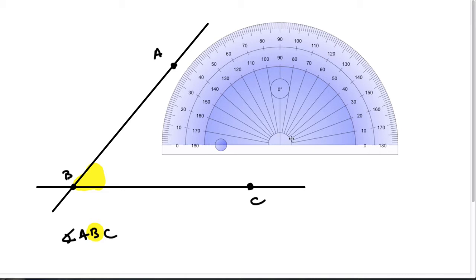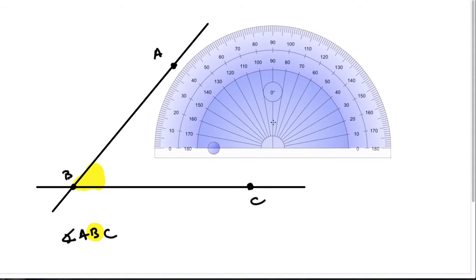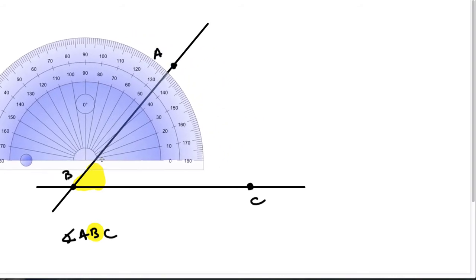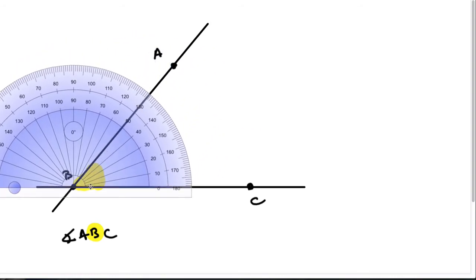And inside this little dome here we want to line up the intersection of this vertical and horizontal line with the corner of our angle. So we put that smack in the middle of our angle.